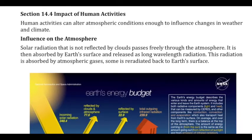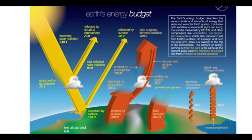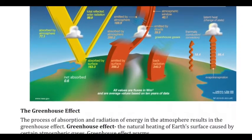A lot of sunlight is reflected off the earth — that's why you would be able to see the earth from space. There is a lot of sunlight that comes off the earth, but some of that sunlight is actually warming the ground, and as it's warming the ground it reflects back up as heat, and then the heat gets trapped in the clouds.